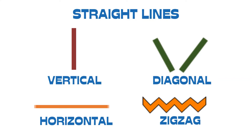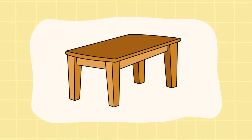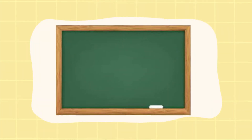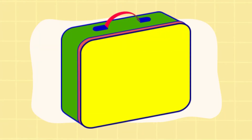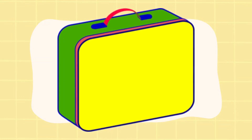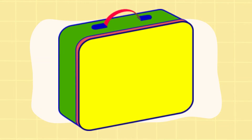Now, let's find out the objects that are made out of straight lines. The first example is the table. Next, the briefcase — it's also made of straight lines. Even the blackboard. And of course, your lunchbox. So, your lunchboxes are also made out of straight lines.